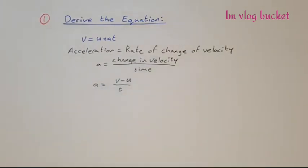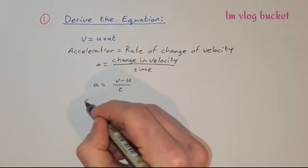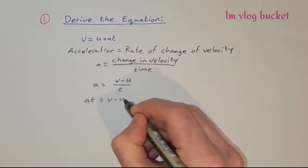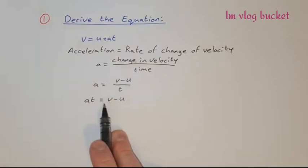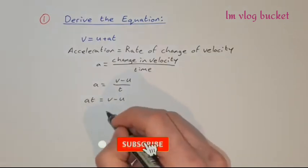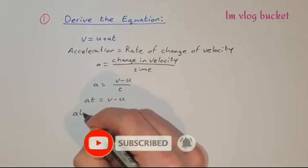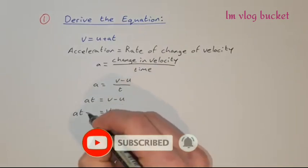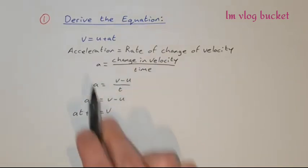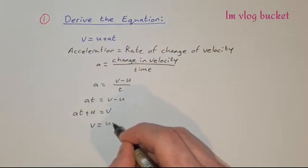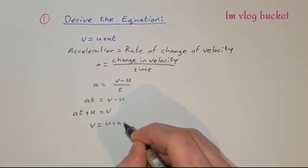So we multiply across by t to get at = v − u. Now we just rearrange this formula to get v on its own, so v = at + u. And then to get it into the form we were given at the start, we just rearrange the sides: v = u + at.